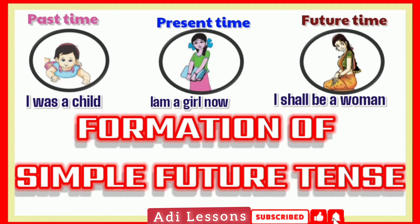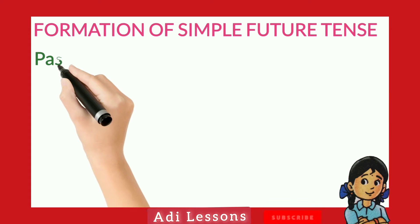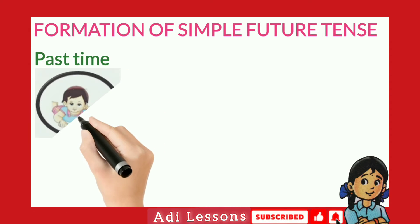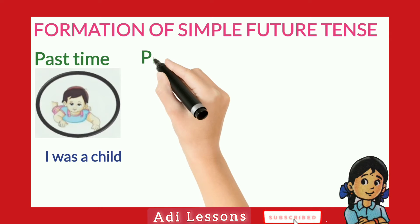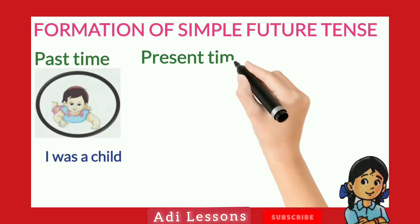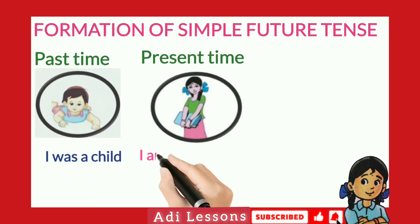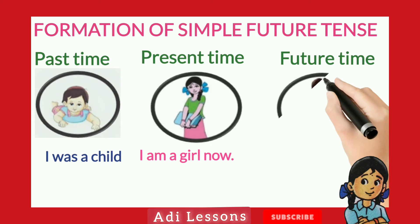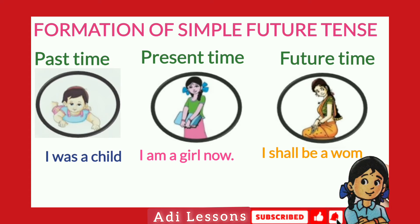Formation of simple future tense. Past time: I was a child. Present time: I am a girl now. Future time: I shall be a woman.